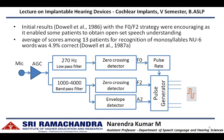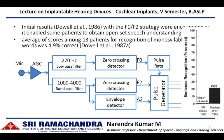The initial results with the F0-F2 strategy were encouraging, as it enabled some patients to obtain open-set speech understanding, as reported by Dowell et al. in 1986. Dowell et al. in 1987 reported that the average recognition scores for monosyllables using the Northwestern University Word List No. 6 was 4.9% correct among 13 patients. Sentence recognition scores also improved when comparing single-channel cochlear implant users with multichannel cochlear implant users using the F0-F2 strategy.